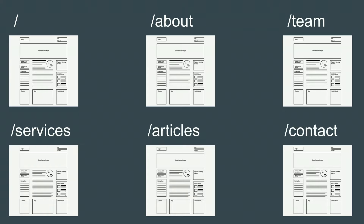Let's say we have a website — uic.edu, for example. That is a website. A website is composed of different web pages, each of which is identified by a URL. The slash here represents the home page, but if this is a company, we can have an about page, a team page, a services page, an articles page, a contact page, and many more.